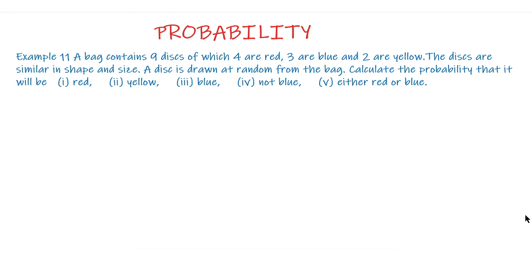Calculate the probability that it will be: part 1 red, part 2 yellow, part 3 blue, part 4 not blue, part 5 either red or blue.